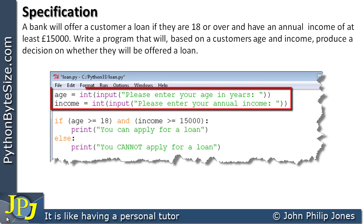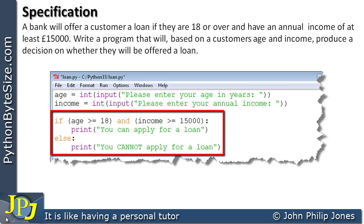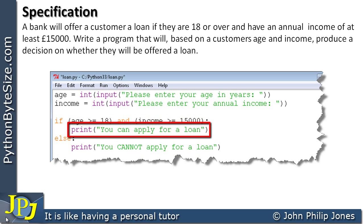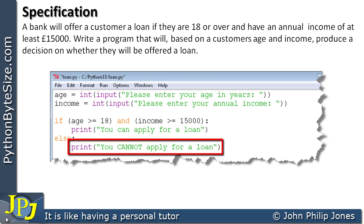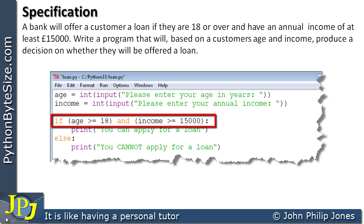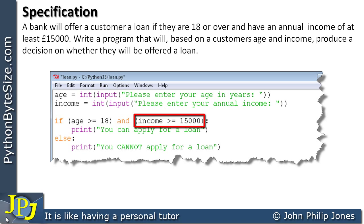The first two lines of the program form a sequence that asks the user to enter their age and their income. This here is a selection construct. The selection construct will either print 'you can apply for a loan' or 'you cannot apply for a loan', and whether this or that executes depends upon this line here, where we have age greater than or equal to 18, income greater than or equal to £15,000, and in the centre the AND logical operator.